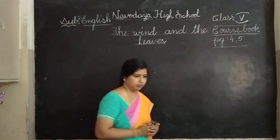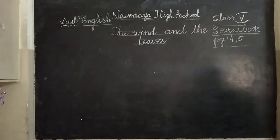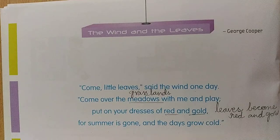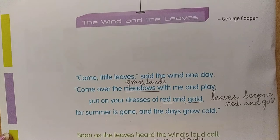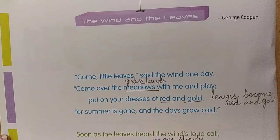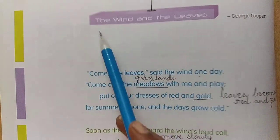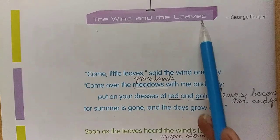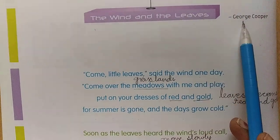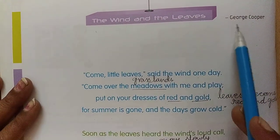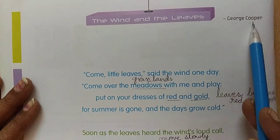The Wind and the Leaves. Take your pencils also so that you can write meanings. Look at the book, page number 4. 'The Wind and the Leaves' by George Cooper. Who is the author of this poem? George Cooper.